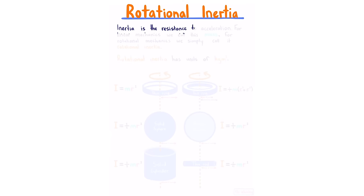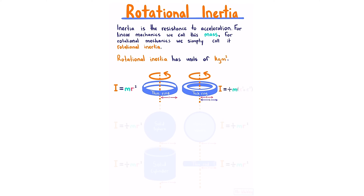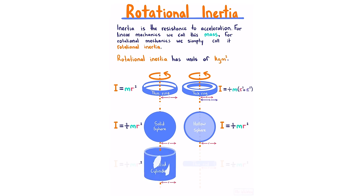Rotational inertia. Inertia is resistance to acceleration — for linear mechanics it is mass; for rotational mechanics it is rotational inertia, with units of kg m². Common shapes: a thin ring has I equals mr²; a thick ring has I equals ½m(r1² + r2²); a solid sphere has I equals ⅖mr²; a hollow sphere has I equals ⅔mr²; a solid cylinder has I equals ½mr²; and a thin rod rotating about its long axis has I equals 1/12 mr². All are proportional to mr².